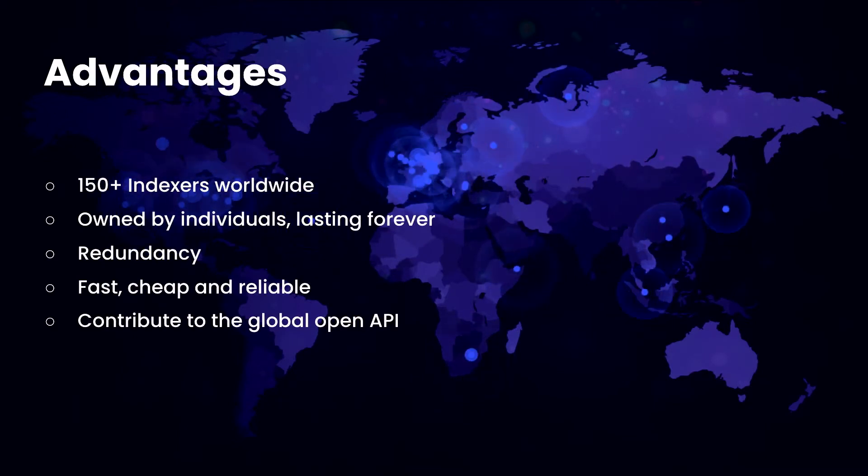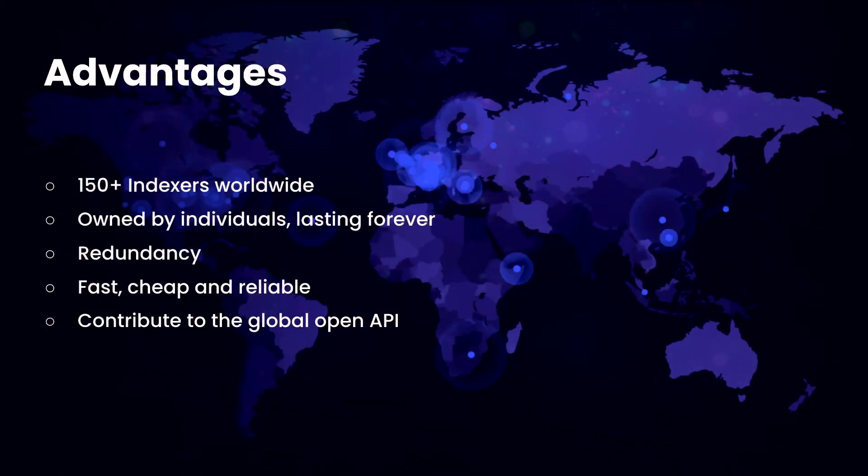Why should you do that? Currently most developers use the hosted service, but the Graph network has a lot of advantages. There are more than 150 indexers worldwide. If you deploy your subgraphs to the decentralized network, some of those indexers will pick it up and start to index, so you have worldwide coverage of your data. The hosted service run by Atronode in a centralized manner is only located in a US data center. The Graph decentralized network is permissionless, owned by individuals, and will last forever — kind of like the blockchain. You also get redundancy: if one indexer goes down, gets censored, or has a problem, there are still others to jump in.